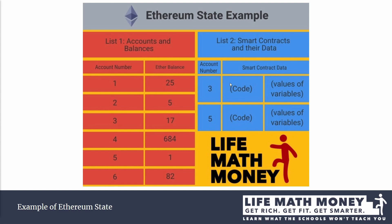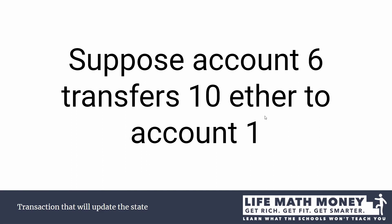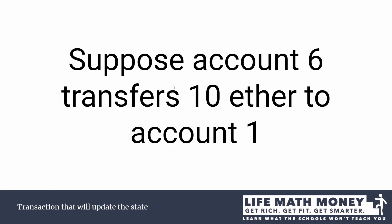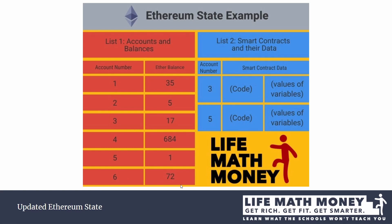Let me give you an example of a transaction. Let's say account number six wants to send 10 Ether to account number one. The balance of account six has reduced by 10 and it's increased by 10 for account one. The balance was 82 for account six and 25 for account one. After this transaction is processed, it's become 72 for account six and 35 for account one. This is the gist of what the Ethereum state machine is.